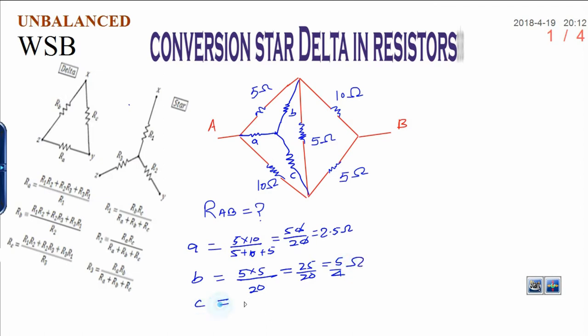Now similarly, you have to calculate the value of C. Adjacent resistors are 10 and 5, 10 times 5 divided by sum total, that is 20. It means same as the first, that is 2.5 ohms.